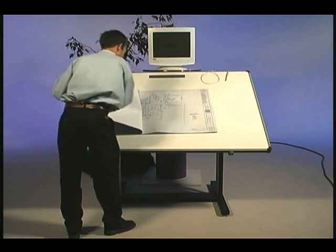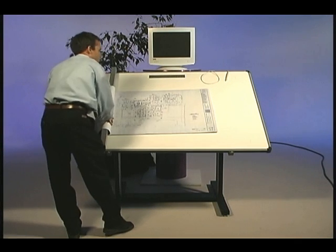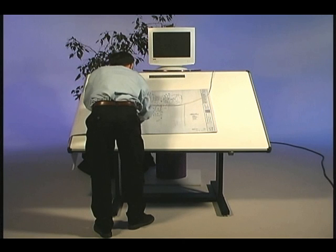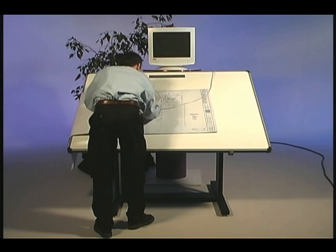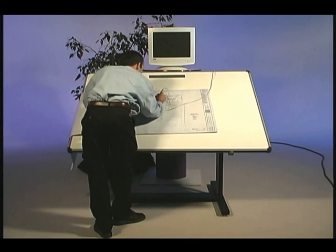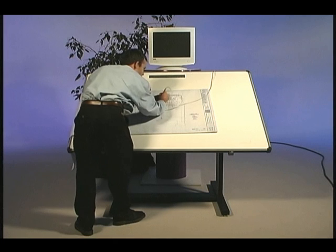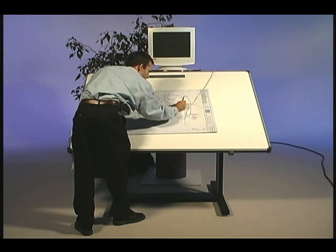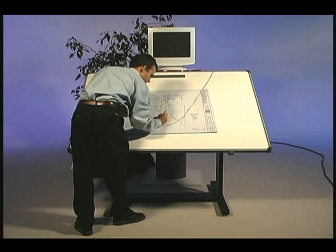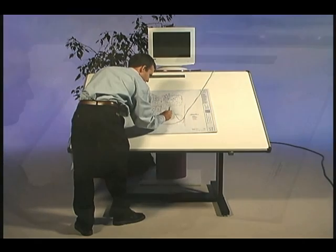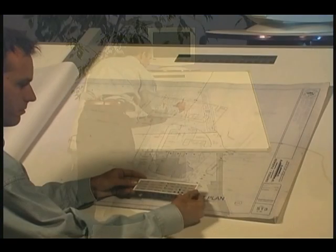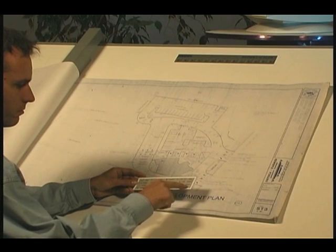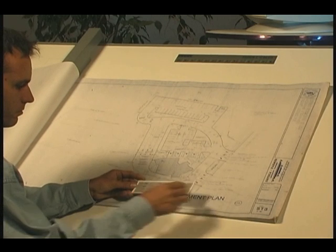The tablet digitizer reads through a one-inch-thick set of plans, so there's no need to separate plans into single sheets. The digitizer pen, or stylus, is connected to the tablet and measures quantities by simply touching its tip to the plan surface. The digitizer is connected to the computer by a cable attached to the serial port, and the Power Takeoff software can run on any computer running Windows 95, 98, NT, or 2000.